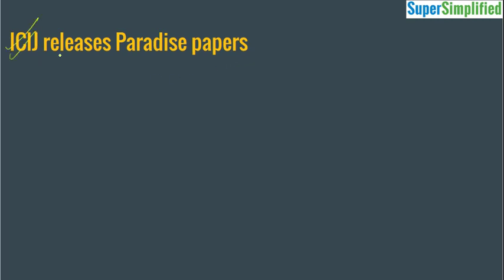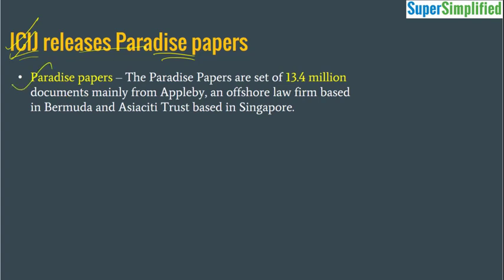Now let's come to the news headline: ICIJ releases Paradise Papers. What are these Paradise Papers and what is ICIJ? Paradise Papers are a set of 13.4 million documents, mainly from two firms. The first firm is Applebee, an offshore law firm based in Bermuda. When we spoke about the creation of shell companies, you have to take help of one of these companies — like in the Panama Papers case, we had Mosaic Fonseca; here we have Applebee. You approach them and they create a shell company for you, do the legal work, and appoint a caretaker for your dummy company. The other company from where documents are leaked is Asia City Trust, based in Singapore.